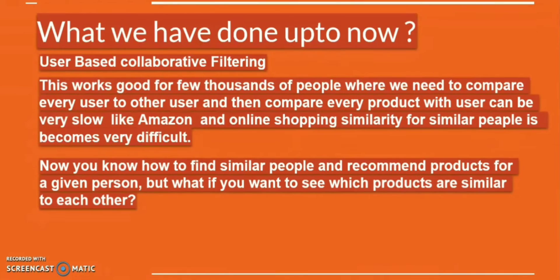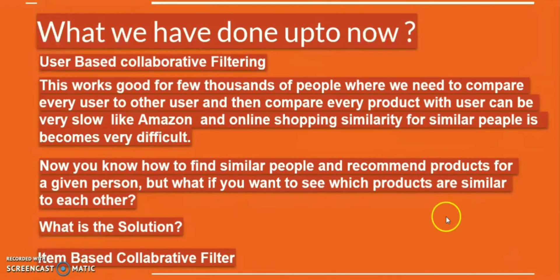Another reason to move to item-based filtering is to find similarity between item to item. This scenario occurs when your user has no experience on your website — meaning no online purchase activity — and they are not logged in or registered. So how are you going to recommend other items of the same nature? For example, if you visit Amazon without any registration, it will also recommend items of the same nature as what you're looking for.